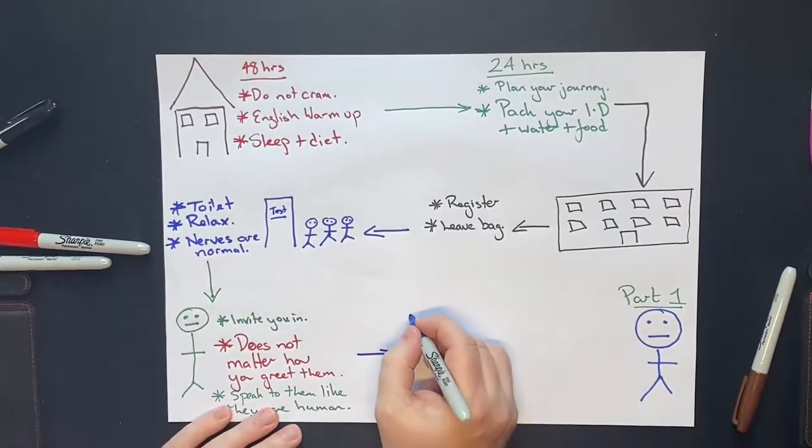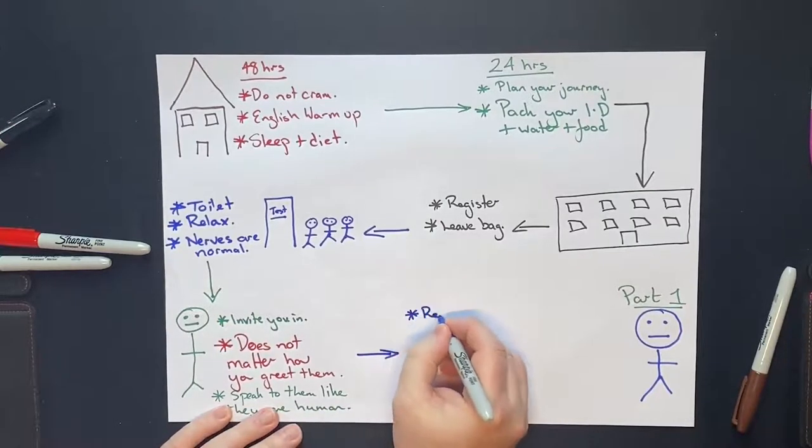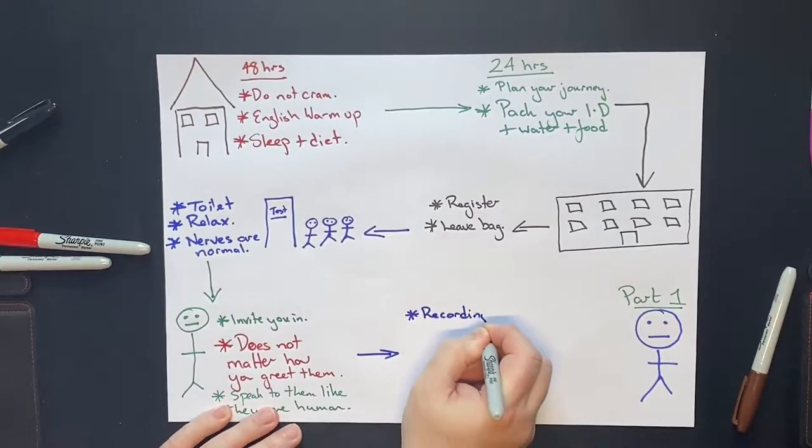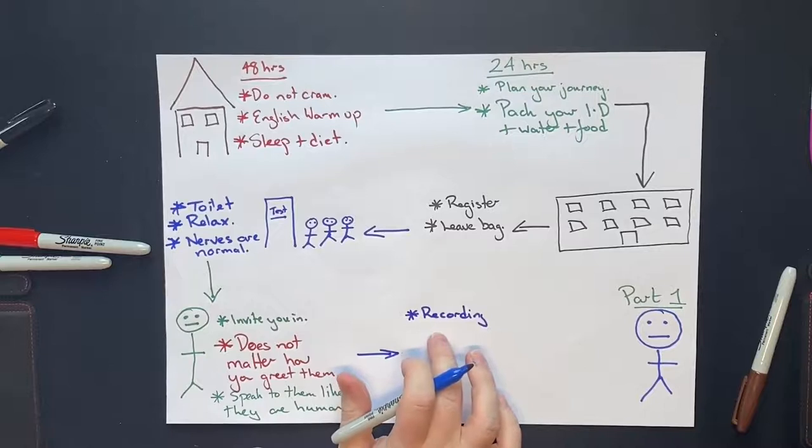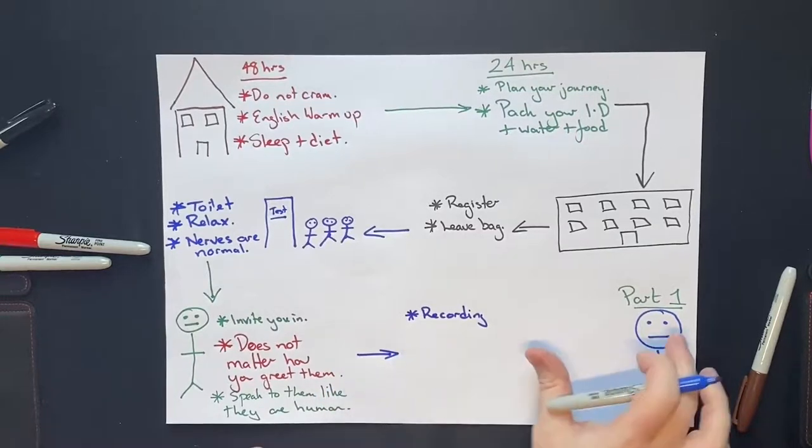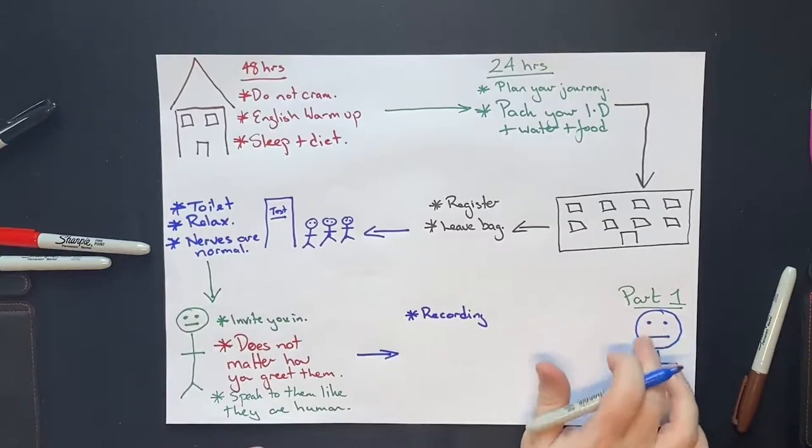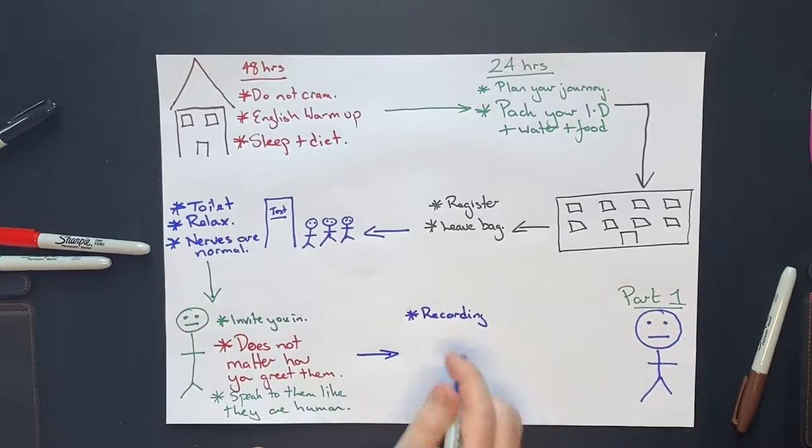So they'll ask you to sit down and you'll sit down opposite them and they will be recording what you are saying already. Even though they're recording what you're saying already, they don't use this to judge your score. Your score doesn't begin until they ask you the first question in part one. But don't be put off by this.